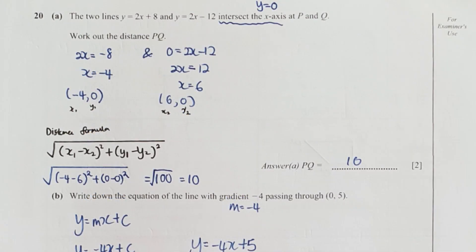Question 20, take note keyword here is intersect at x-axis, which means your y equals to 0. The other thing is you need to calculate the distance of PQ. When your y equals to 0, your x coordinates will be negative 4, 0 and the other line will be 6, 0. Using the distance formula attached, your PQ distance is 10.